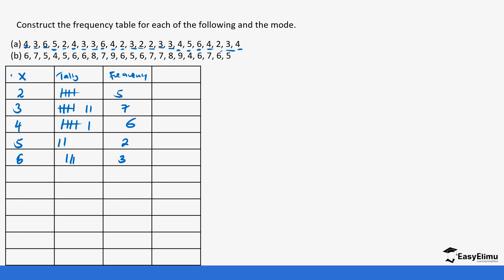Let's verify: 2 appears 5 times, 3 appears 7 times, 4 appears 6 times, 5 appears 2 times, 6 appears 3 times. Always confirm your values so you do not get the wrong answer. Looking at the frequency distribution table, the highest frequency is 7, so the value that occurred the most was 3. Therefore, the mode is 3.